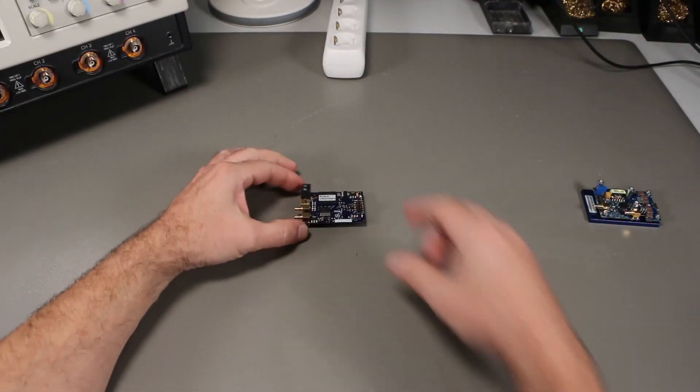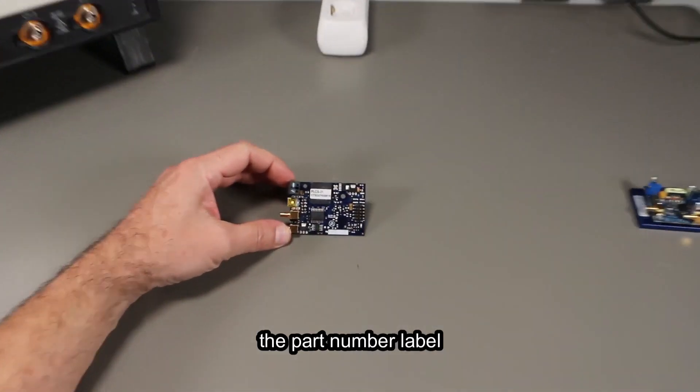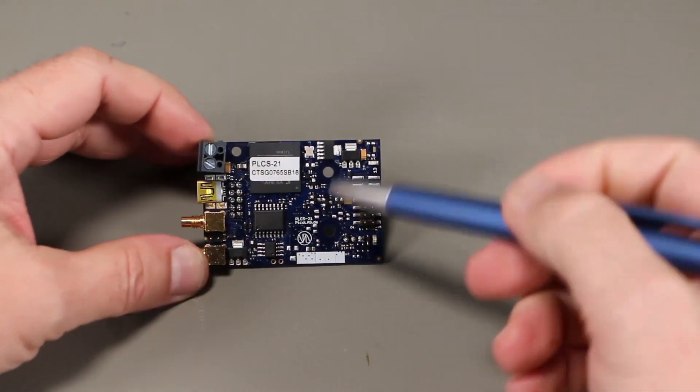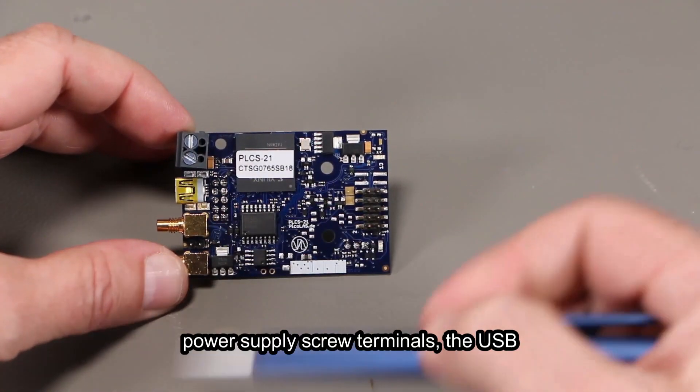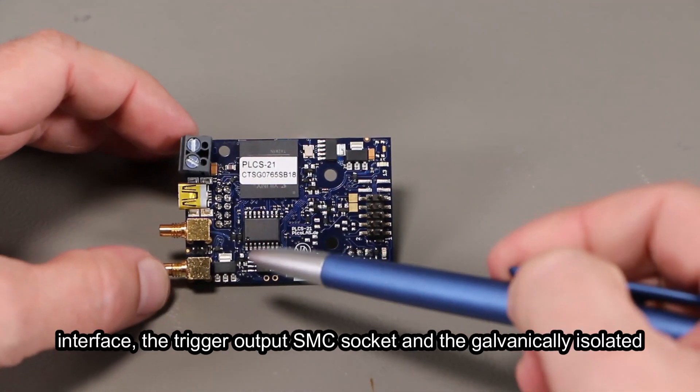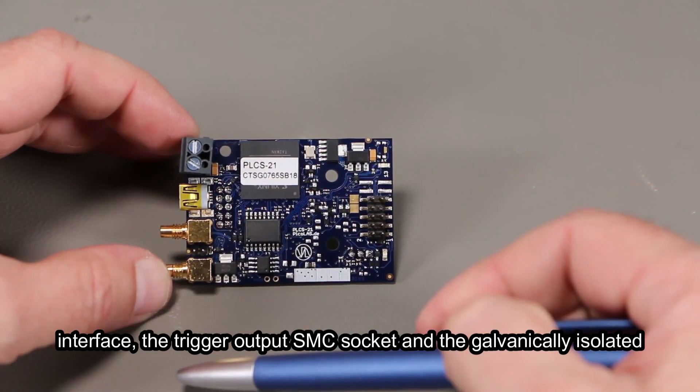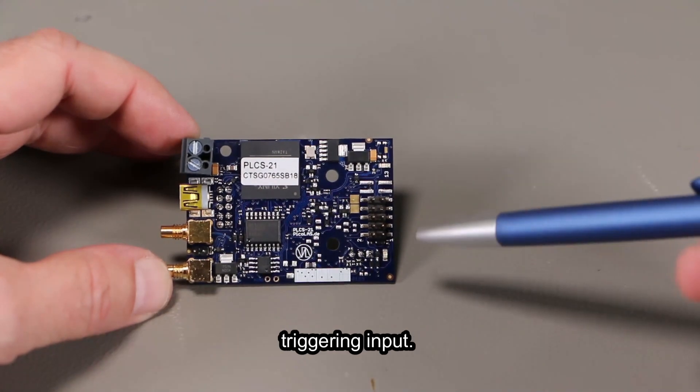You now can see the part number label mentioning PLCS21. On the left hand side are the power supply screw terminals, the USB interface, the trigger output SMC socket and the galvanically isolated triggering input.